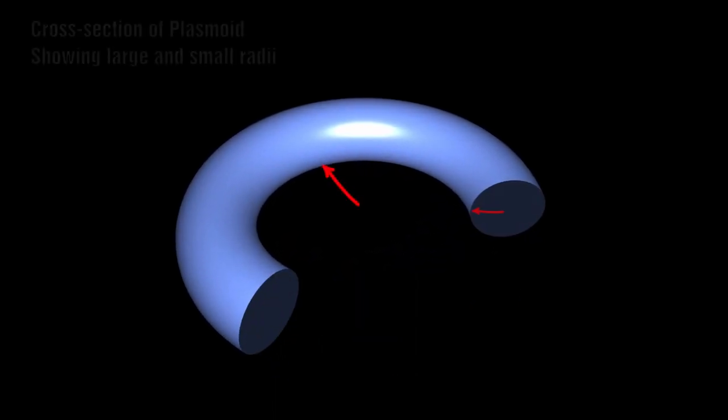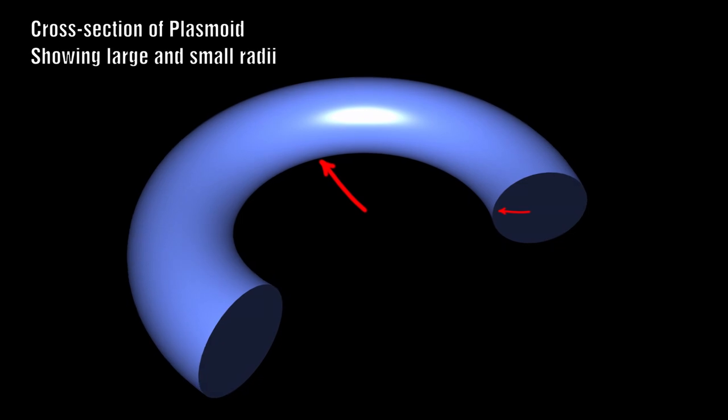He speculated that as the plasmoids moved along, it was not stable and both its large and small radii would steadily increase and he likened this expansion to a magnetic explosion where most of the outward velocity is picked up when the plasmoid is small.